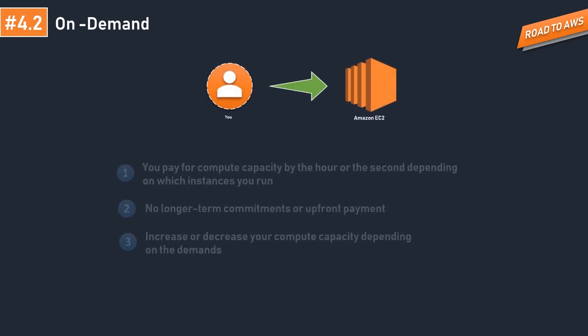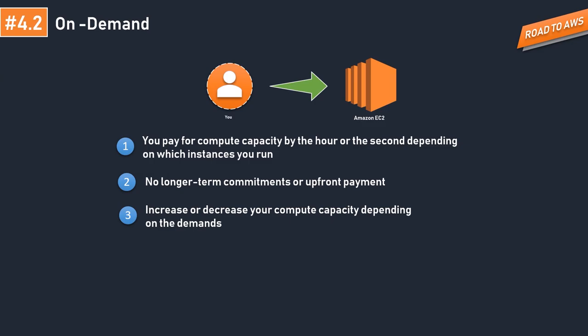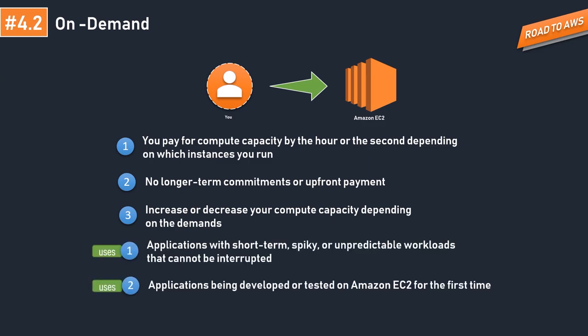The next pricing model is the on-demand instance. You have full control over its lifecycle — you decide when to launch, stop, hibernate, start, reboot, or terminate it. You pay only for the hours that your on-demand instance is in the running state, with no long-term commitment required. On-demand instances are typically used for application testing, web service testing, or initial deployment of a product to test traffic, based on which you may decide how to scale in the future.